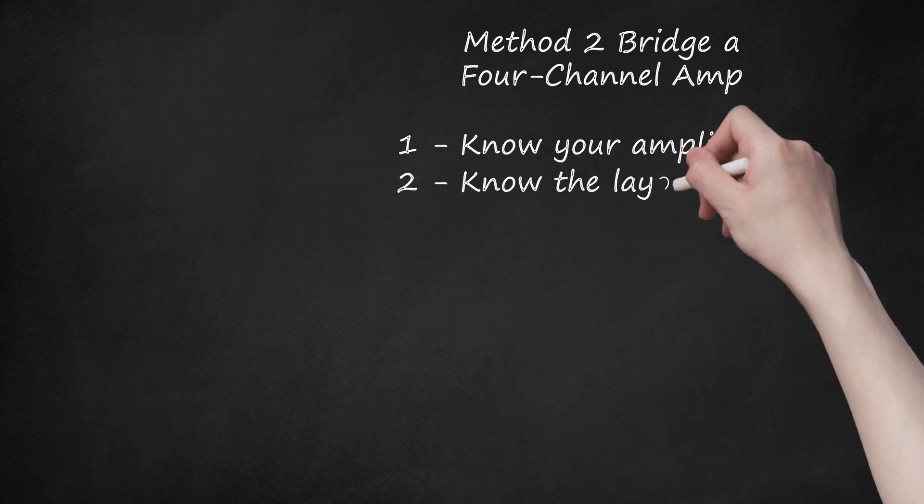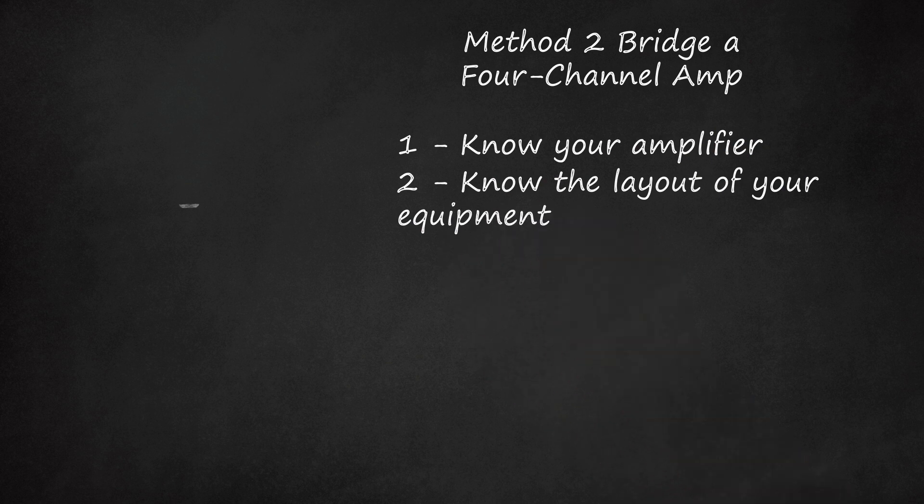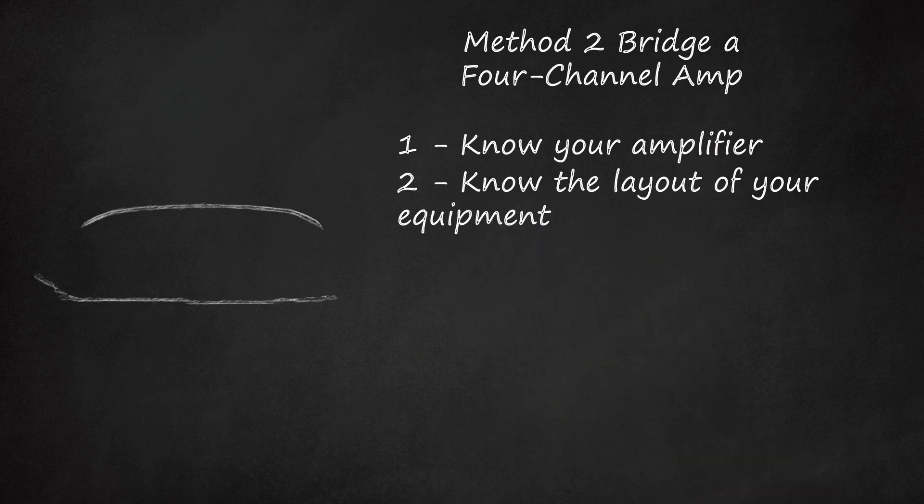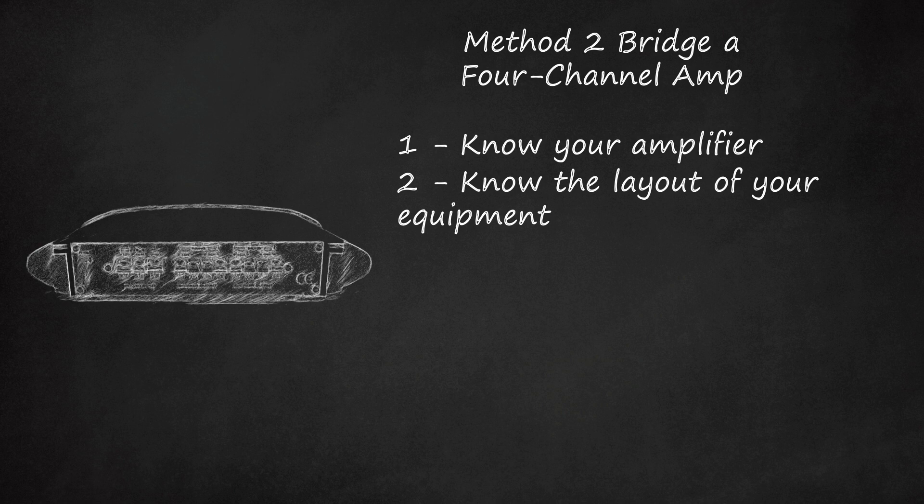Step 2: Know the layout of your equipment. On your 4-channel amp, you should see 8 terminals. Channels 1 through 4 each have a positive and negative terminal. Each terminal will be labeled as follows.